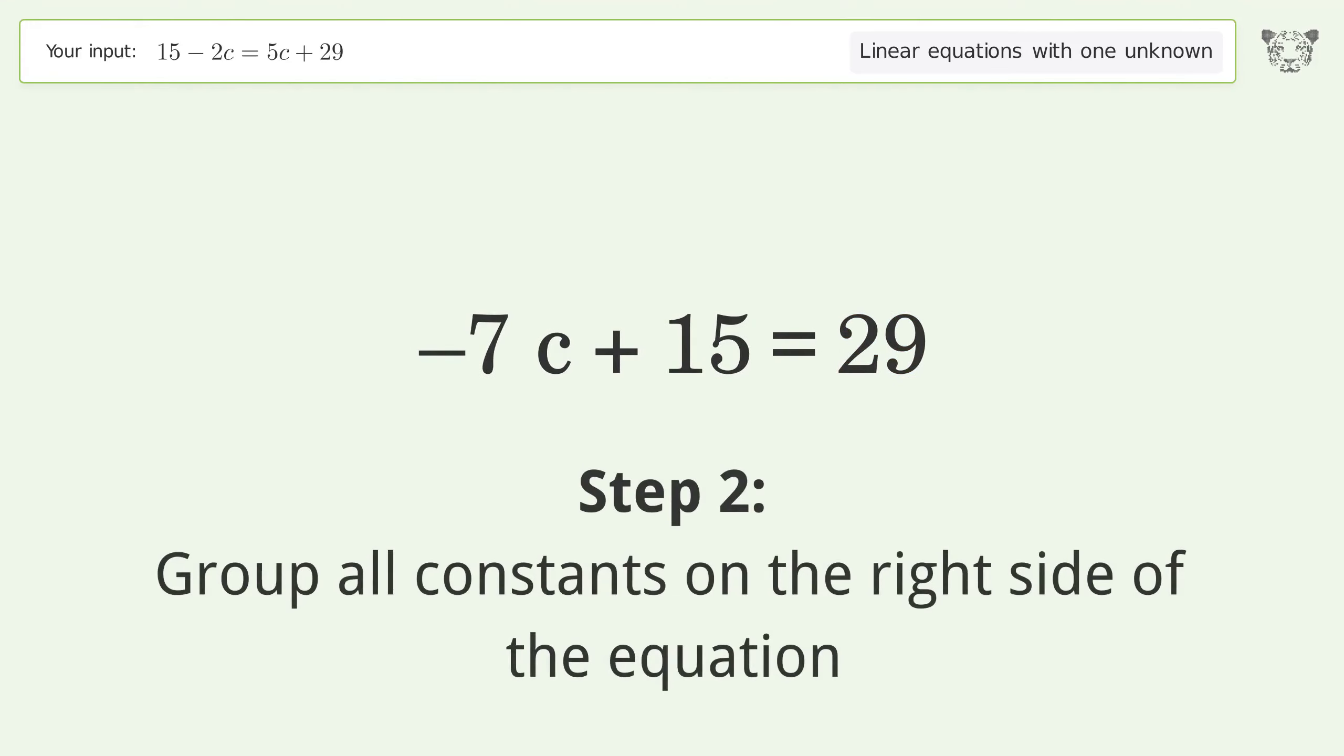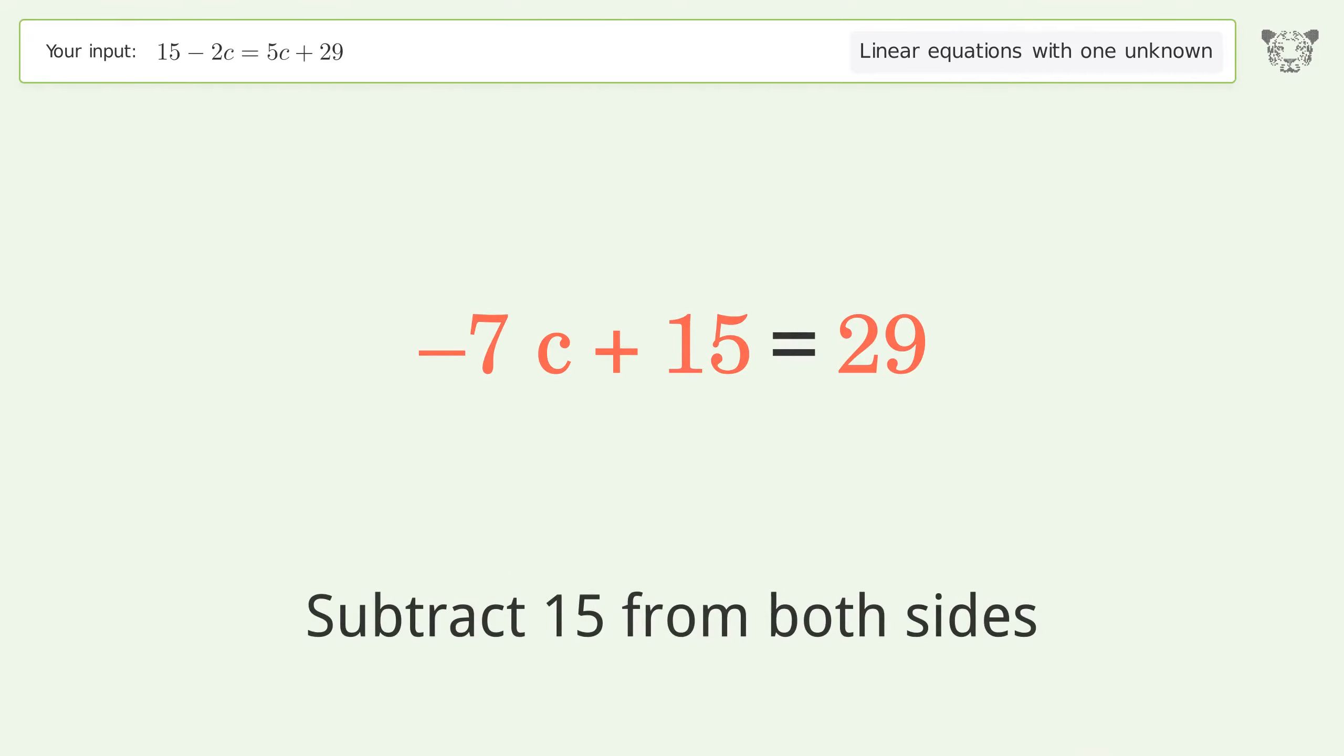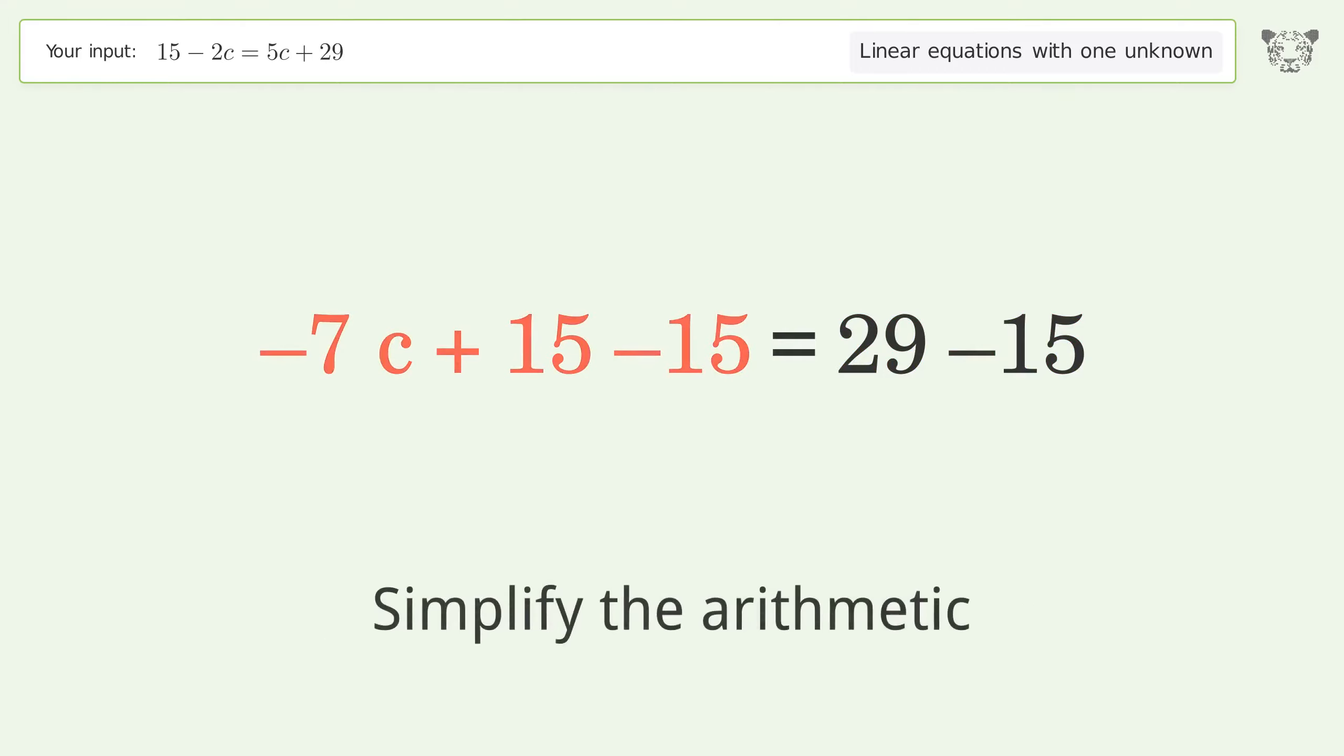Group all constants on the right side of the equation. Subtract 15 from both sides. Simplify the arithmetic.